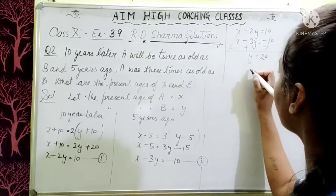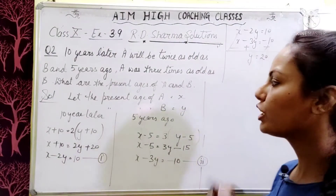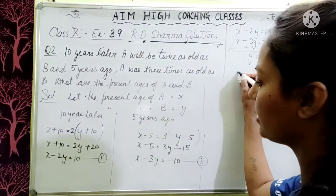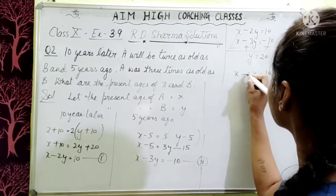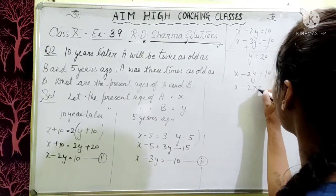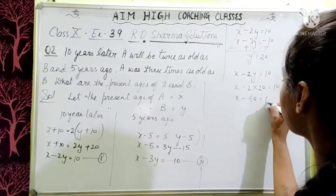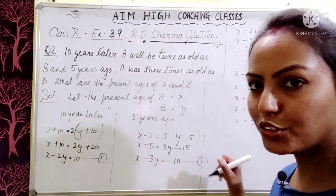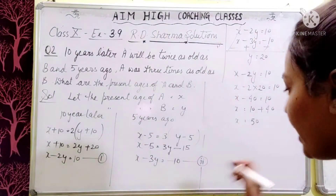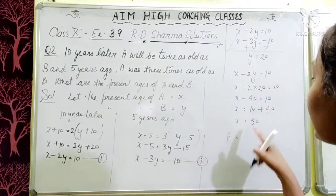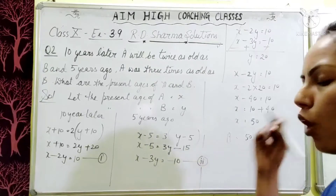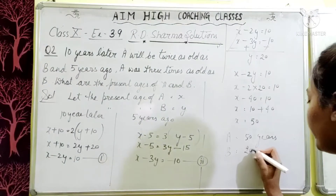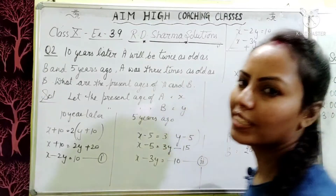Now solving: x − 2y = 10 and x − 3y = −10. Subtracting gives y = 20. y is B's present age = 20 years. Substituting into equation 1: x − 2(20) = 10, so x − 40 = 10, giving x = 50. Therefore A's present age is 50 years and B's present age is 20 years.